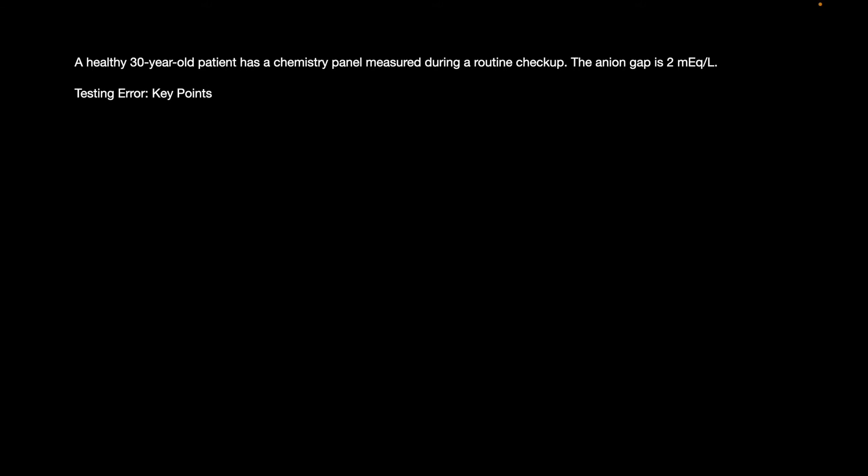What are the causes of low anion gap? We will go case by case. The first case is a healthy 30-year-old patient with a chemistry panel measured during a routine checkup, which showed an anion gap of 2. Why should a healthy 30-year-old have an anion gap of 2? The most common reason is a testing error.